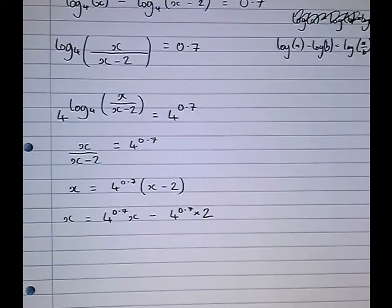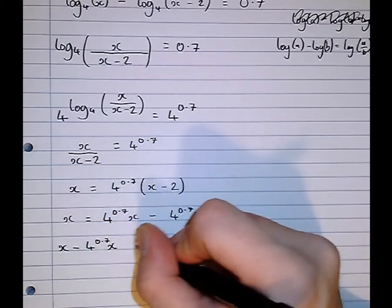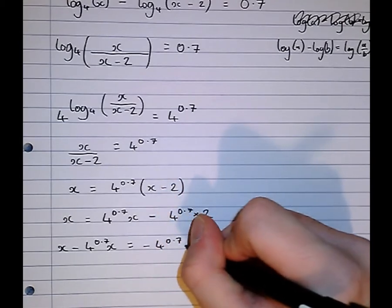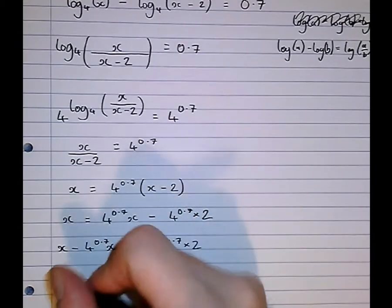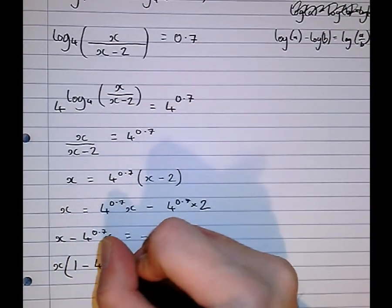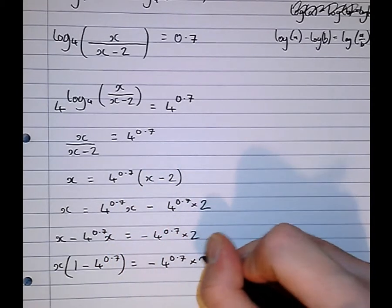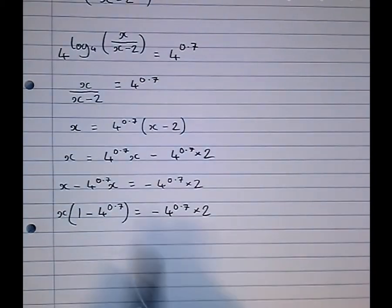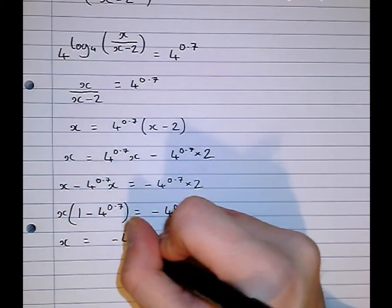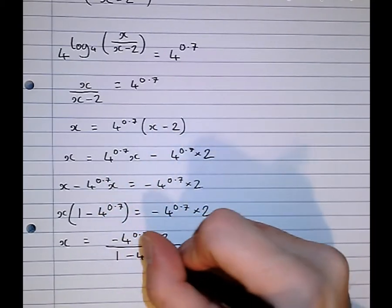Getting all the x's onto one side: x minus 4 to the 0.7 x equals minus 4 to the 0.7 times 2. Factorizing out x: x bracket 1 minus 4 to the power of 0.7 equals minus 4 to the 0.7 times 2. Then dividing by the number attached to x, I get x equals minus 4 to the 0.7 times 2 over 1 minus 4 to the 0.7.